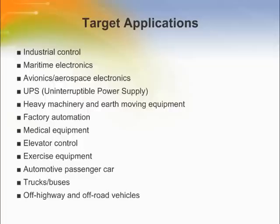CAN is being designed into a wide range of applications that use command and control networks. Some of these applications include industrial control, maritime electronics, avionics and aerospace electronics, UPSs, heavy machinery, and earth moving equipment. Others include factory automation, medical equipment, exercise equipment, elevator control, and automotives, just to mention a few. The CAN serial bus protocol is a high speed, reliable communication protocol for applications requiring robust communications at bit rates reaching 1 Mbps.